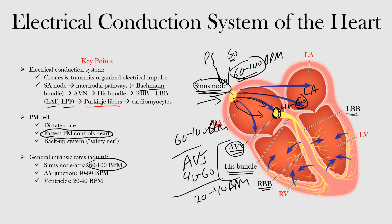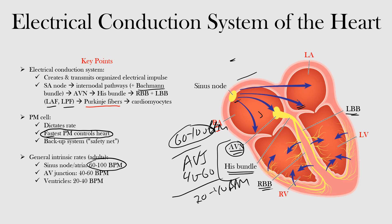Knowing the rate of a rhythm can give you an idea of where it's originating from. If we see a rate around 60 to 100 beats per minute and the patient is fine, it may be coming from above the ventricles. Knowing how to determine rate is something we'll cover in upcoming lectures. Remember there are safety nets: if the sinus node fails, an atrial or AV nodal pacemaker takes over; if the AV junctional pacemaker fails, a ventricular pacemaker takes over.